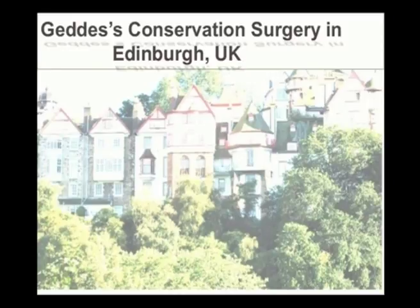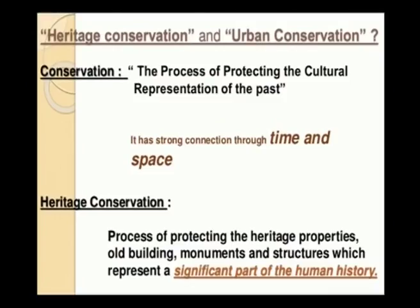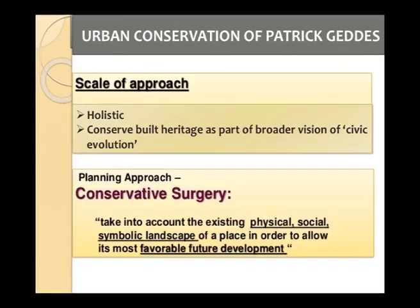Moving on to the concept of conservative surgery suggested by Geddes, this was done in Edinburgh, UK, as a case study example. Heritage conservation is the process of protecting the cultural representation of the past, with a strong connection through time and space. It protects heritage properties, old buildings, monuments and structures which represent a significant part of human history. The scale of approach is holistic — you need to conserve built heritage as part of a broader vision of civic evolution. Conservative surgery is a planning approach developed by Geddes that takes into account the existing physical, social and symbolic landscape of a place in order to allow its most favorable future development.